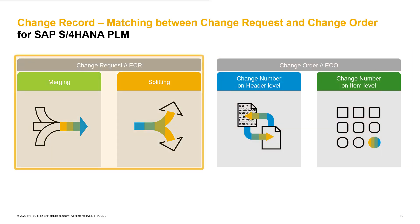In the change request phase, we have the possibility to merge and split change records. Note that merging and splitting is only possible when no change number is attached to the change record. Merging means that multiple change records can be merged into one single change record. Splitting is exactly the other way around — you can split a change record into another change record. The target change record can be a completely new one, or you can merge and split into already existing change records.